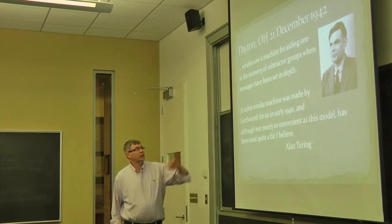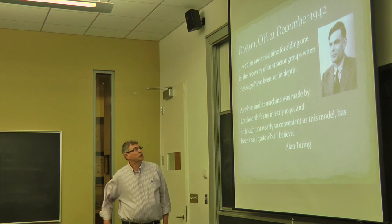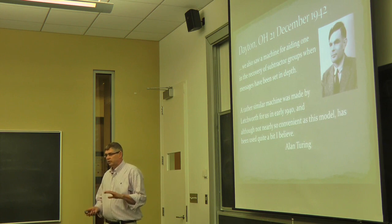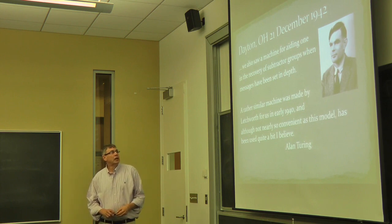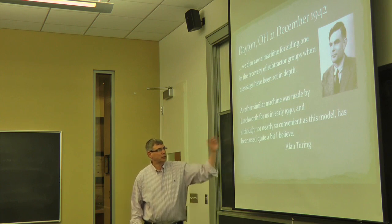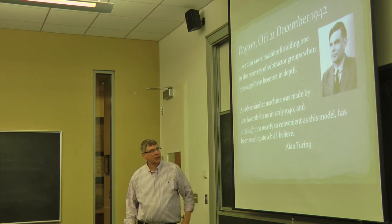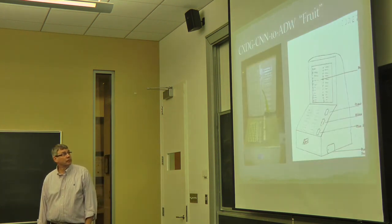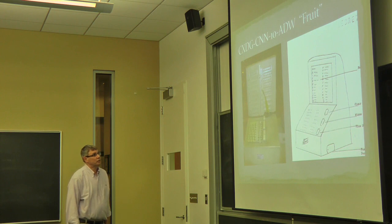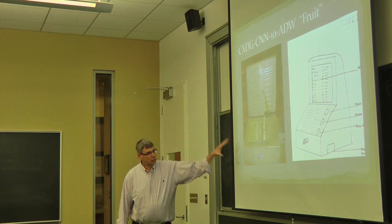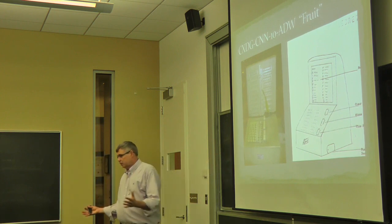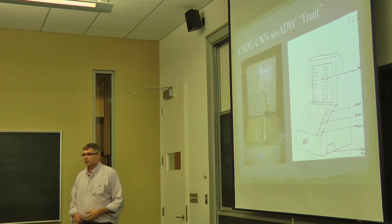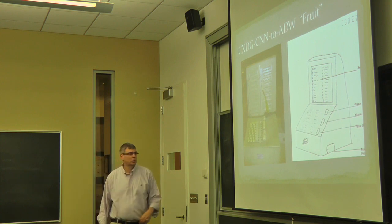He said, it's a machine for aiding in the recovery of subtractor groups. They were thinking of them as subtractors rather than addition. He points out that they had a similar machine built for them in 1940. Maybe not quite as convenient, he said. But this appears in a report that he sent back to Bletchley Park. Again, there's a picture of the machine. It's not a small machine. The base is about 11 by 7 feet. The back of the machine, the display is about 20 inches tall. It weighs over 70 pounds. So, it's not a very portable thing.